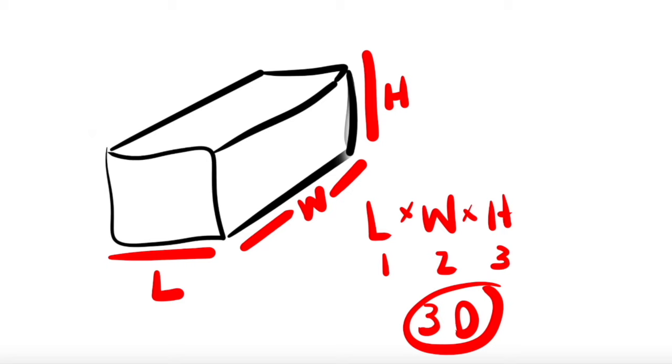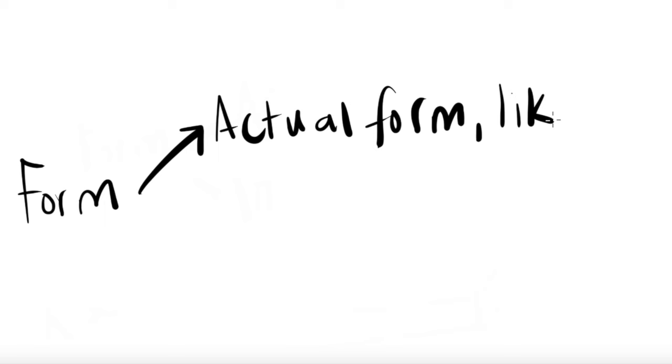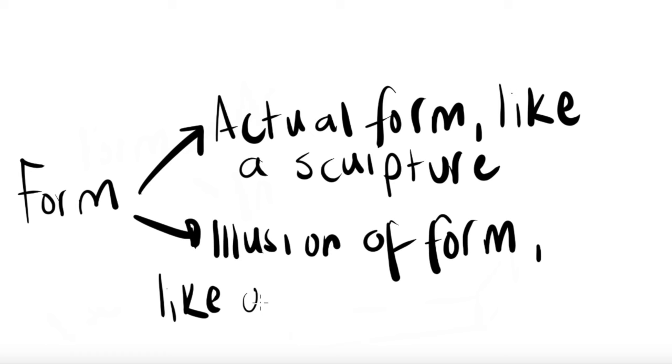When we refer to form, there are two different categories. There's actual form, which is like a sculpture. And then there's the illusion of form. So this is when artists make something look three-dimensional on a two-dimensional plane, like a drawing of a cube.